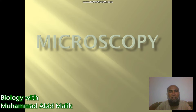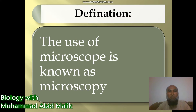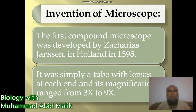We are going forward to start our lesson about microscopy. After seeing this picture, which is relevant to the electron microscope, we can understand the topic. Simply, microscopy is the use of a microscope. The first compound microscope was developed by Zacharias Janssen in 1595.